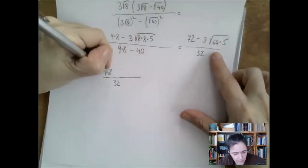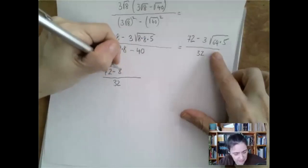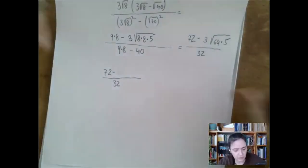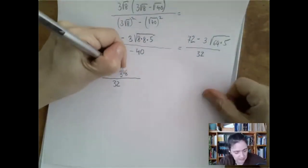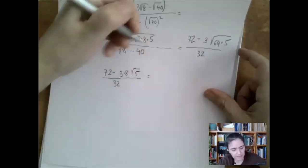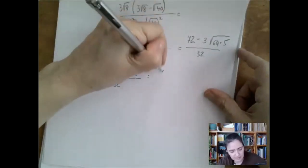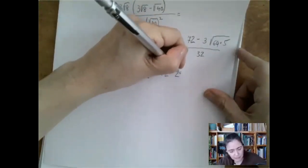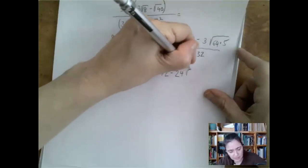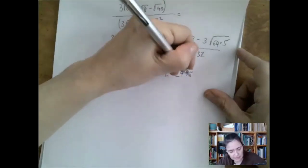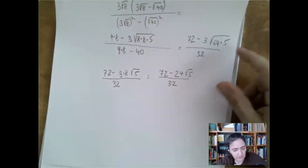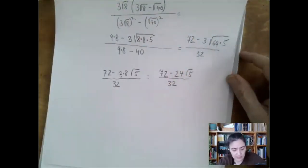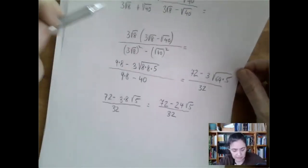We have 72 minus 3 times 8 times square root of 5. So that's 72 minus 24 times square root of 5, divided by 32. Which looks much simpler, because instead of two different radicals, there is just one.